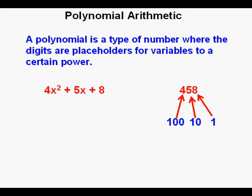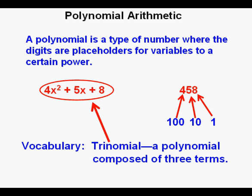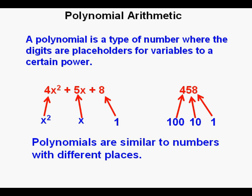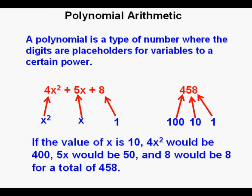Now let's look at the polynomial 4x² + 5x + 8. As an item of vocabulary, we call this expression a trinomial because it has three terms. The three terms are separated by two plus signs. We have 8 in the ones place, 5 in the x's place, and 4 in the x squared's place. I hope you can see that conceptually polynomials are very similar to numbers with different places. In fact, if the value of x is 10, 4x² would be 400, 5x would be 50, and 8 would be 8, for a total of 458.